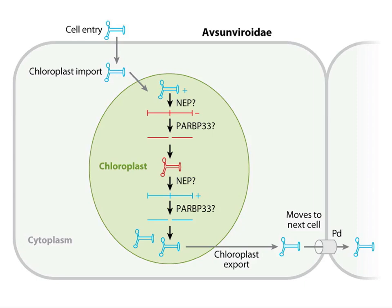The Avsunviroidae family multiplies in the chloroplast. The viroid comes in, it's copied by cell enzymes, making unit concatemers that are chopped up, then folded and copied again — a slightly different replication scheme, but the main point is the host cell replicates them and concatemers are resolved either by the ribozyme or host cell enzymes. These get exported and go into the next cell, eventually infecting the entire plant. If it's a virulent viroid it will cause symptoms — stunting, color changes — if not, the plant may not be harmed.